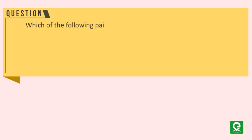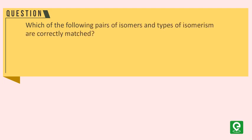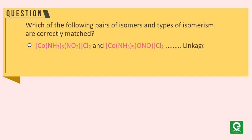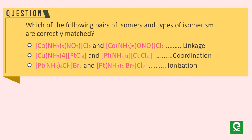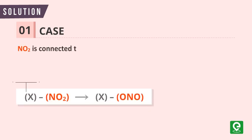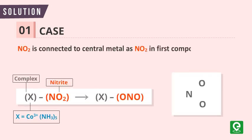Which of the following pairs are isomers and types of isomerism are correctly matched? Number 1: [Co(NH₃)₅NO₂]Cl₂ and [Co(NH₃)₅ONO]Cl₂ — linkage. Number 2: [Cu(NH₃)₄][PtCl₄] and [Pt(NH₃)₄][CuCl₄] — coordination. Number 3: [Pt(NH₃)₄Cl₂Br₂] and [Pt(NH₃)₄Br₂Cl₂] — ionization.